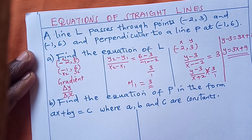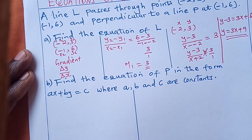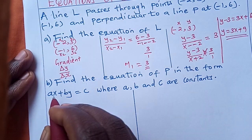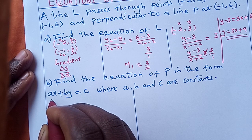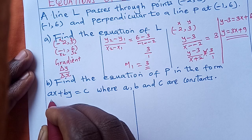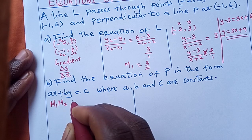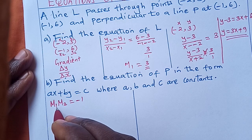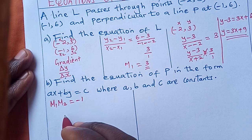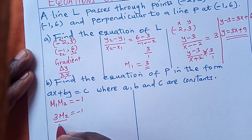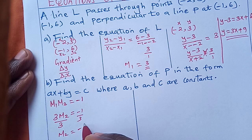Let us proceed to the next part: find the equation of P in the form ax + by = c, where a, b, c are constants. We have been told that line L is perpendicular to line P. Perpendicular lines have a product of gradients equal to -1. So m1 × m2 = -1. We already have m1 = 3, so 3m2 = -1, giving m2 = -1/3.